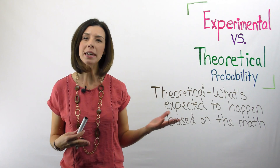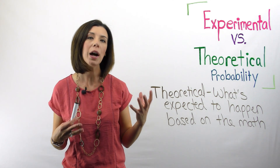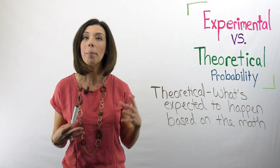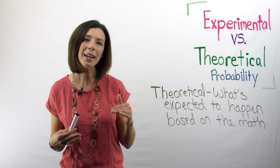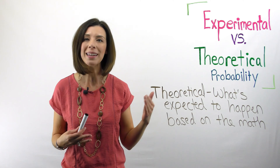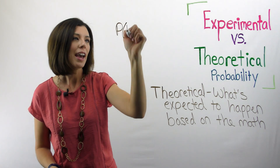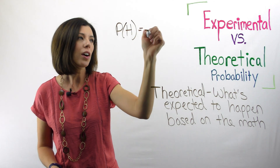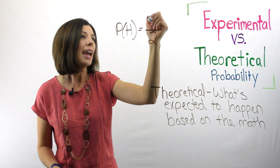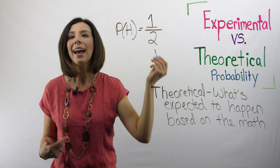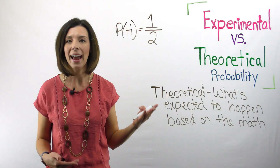When thinking about theoretical probability, I'm thinking about: what's the total number of possible outcomes in the situation, and then how many of those outcomes would give me the desired event? So if I'm finding the probability of heads, I know there are two possible sides on a coin — heads and tails — and I know that there is just one head. So my theoretical probability is one half.